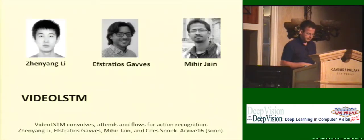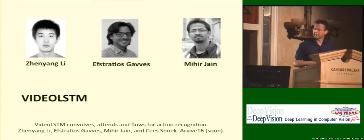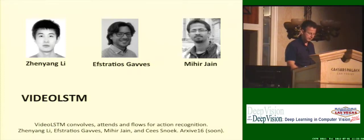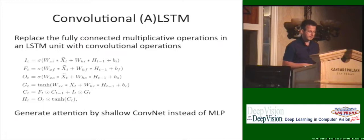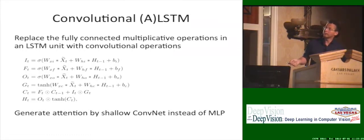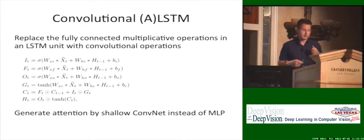This is a joint work with Zhenyang Li, Efstratios Gavves, and me, Cees, all in the QUVA lab in Amsterdam. The paper will appear on arXiv probably somewhere next week. The first observation we have is that there are multiplicative operations inside an LSTM unit based on fully connected input. We say, well, why not replace this with convolutions so that we can use really the spatial information of the medium? Similar to what was done by adding convolutions to neural networks. It's very simple. All you have to do is introduce the convolutions inside the equations. And in addition to generating the attention based on a multilayer perceptron, we will generate the attention by a shallow convolutional neural network so that we also output a convolution and not a vectorized weight for the attention.